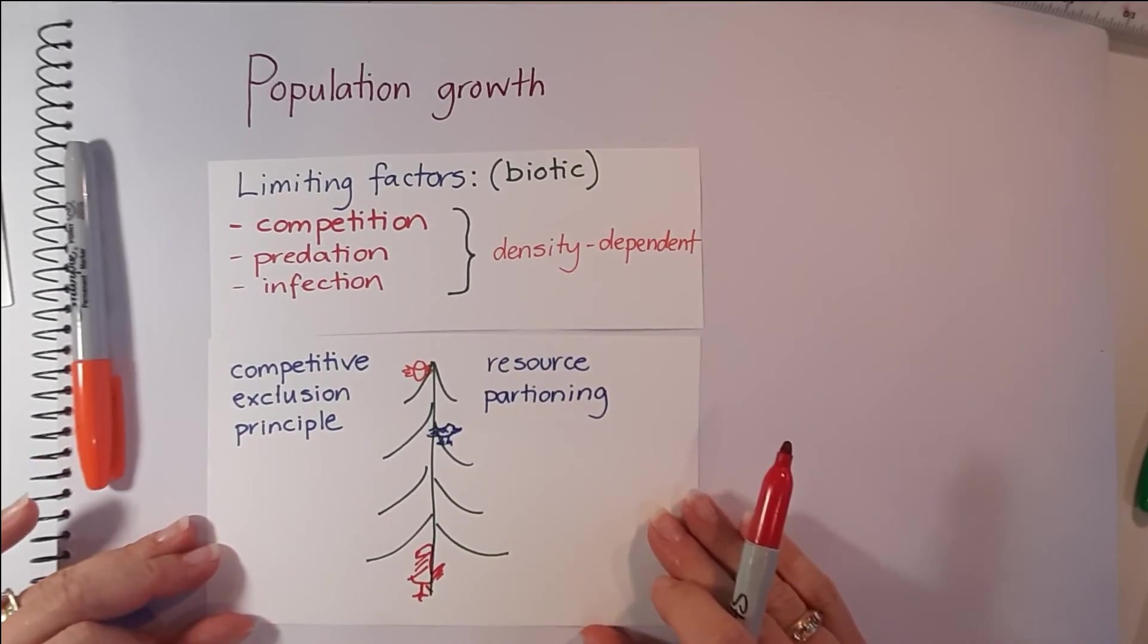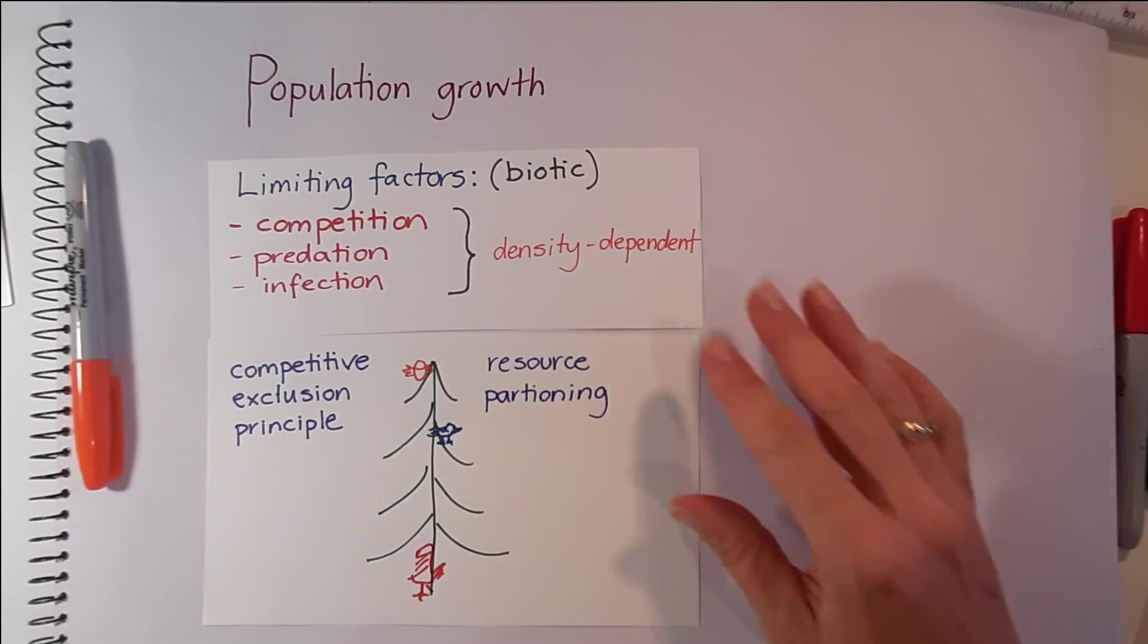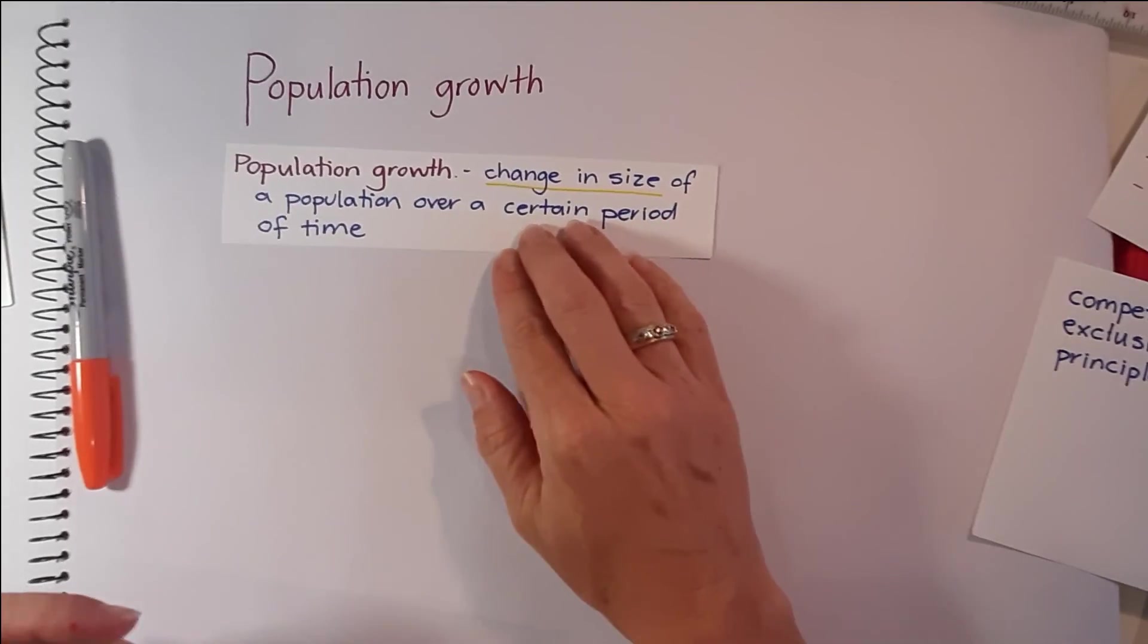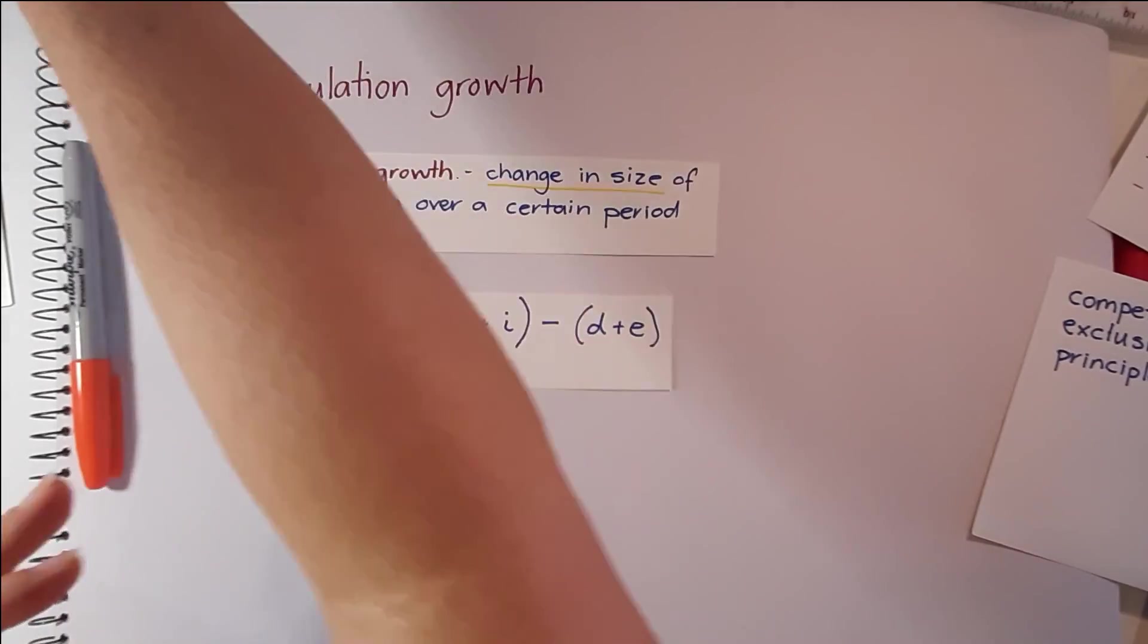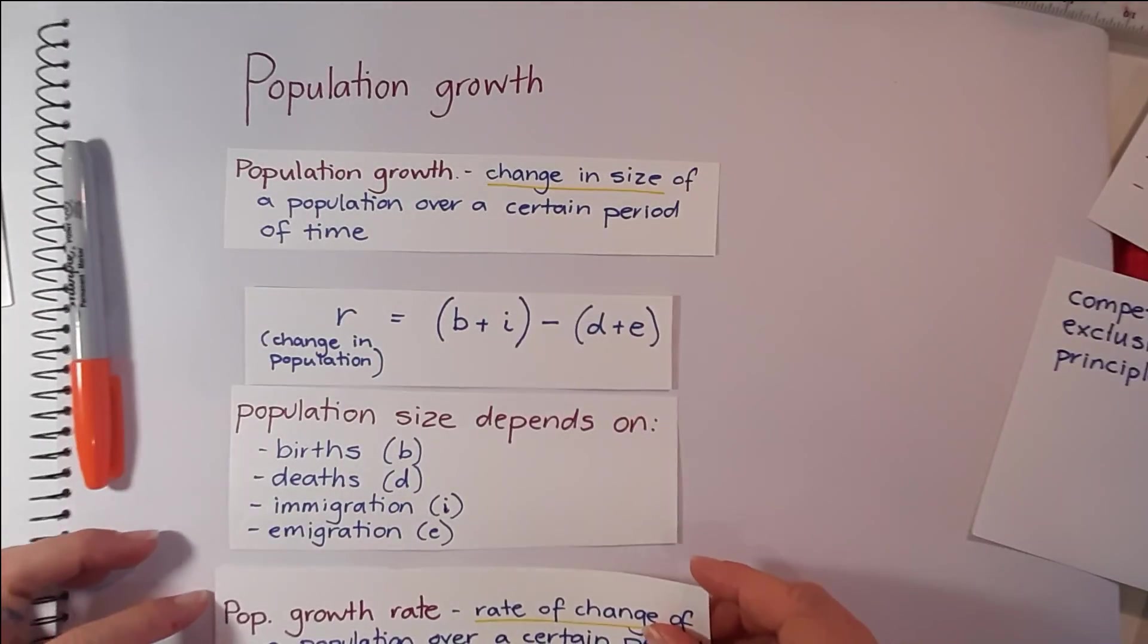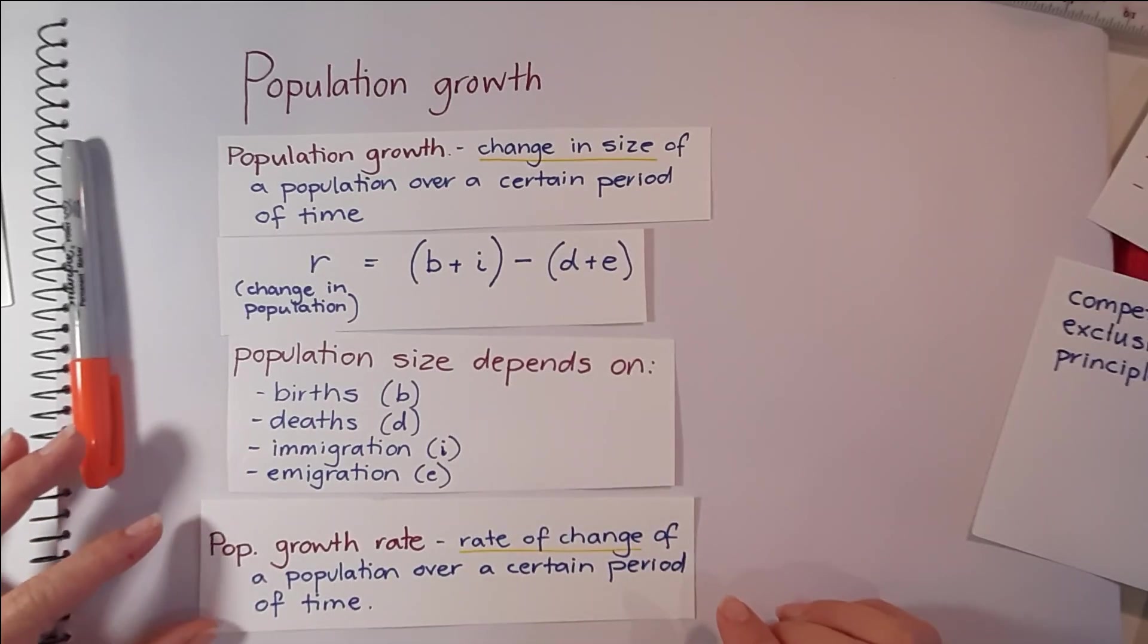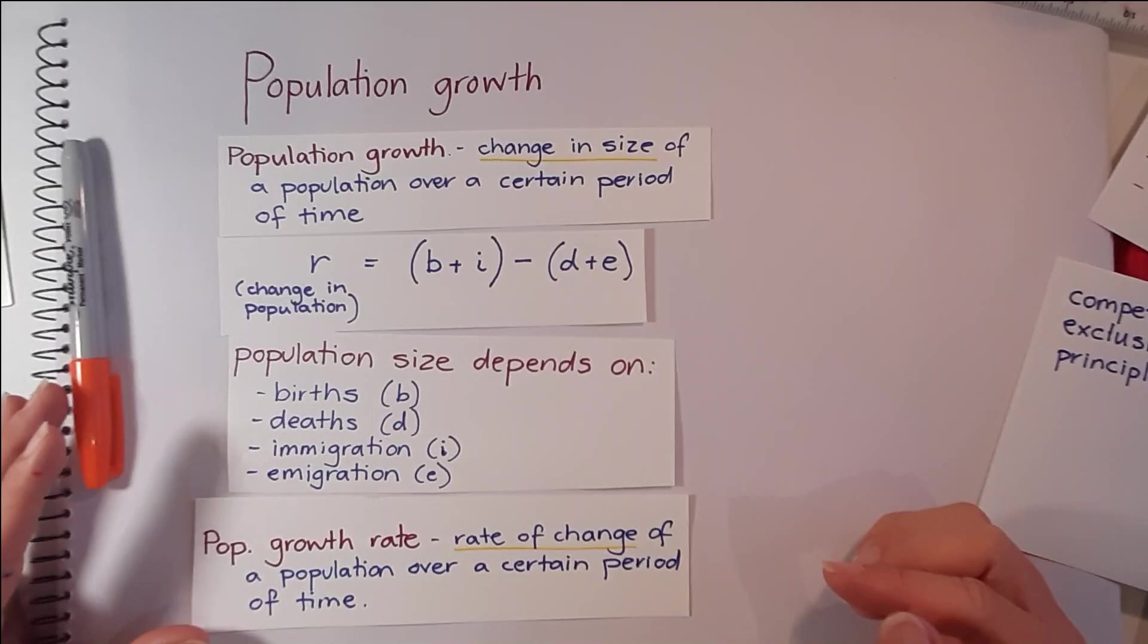But to summarize, population growth is a change in the size of a population over time and we can calculate it using this formula. This is different to population growth rate where we're looking at how the speed at which the population size changes.